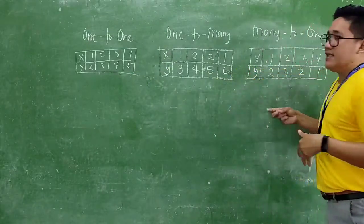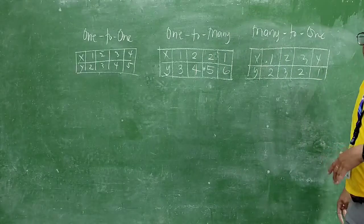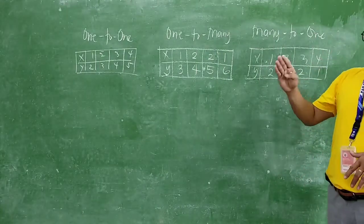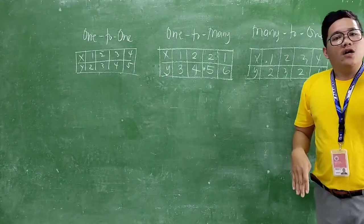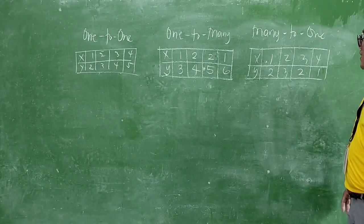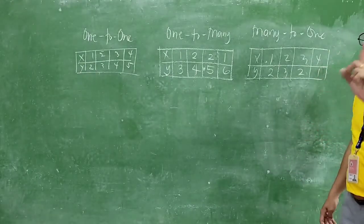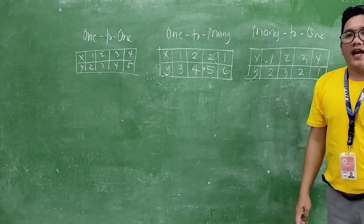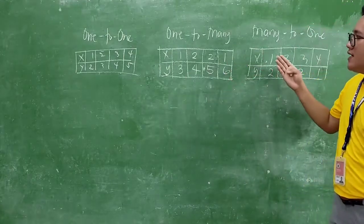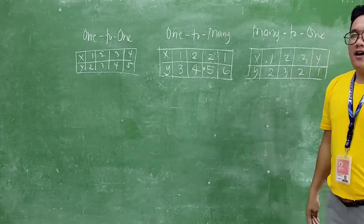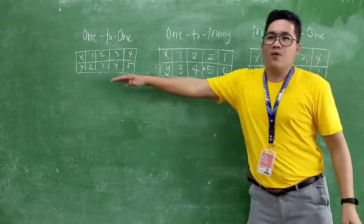The last one, many-to-1, is the opposite of 1-to-many. Meaning, 2 or more elements in X are connected to only one element in Y. As you can see, the x values 1 and 3 are connected to only one value which is positive 2 — nagkabalik tara lang sila ng position. In real life, sila yung madami ang kare-lasyon, so dapat dito kayo sa 1-to-1.